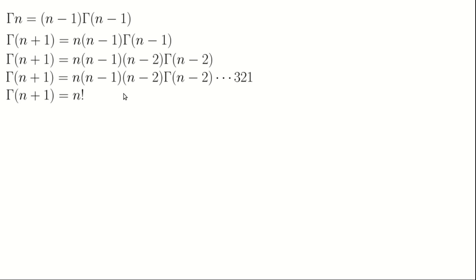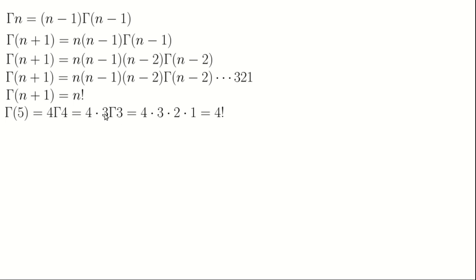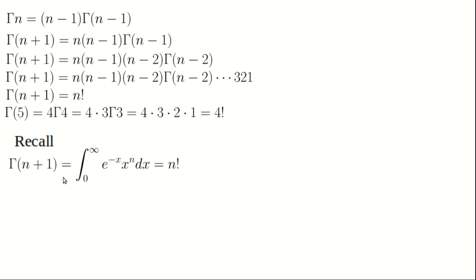With this recurrence relation established, we can evaluate gamma(5). Gamma(5) equals 4 times gamma(4), gamma(4) equals 3 times gamma(3), gamma(3) equals 2 times gamma(2), and continuing this chain, we discover that gamma(5) is nothing but 4 factorial. So gamma(5) equals 4!.